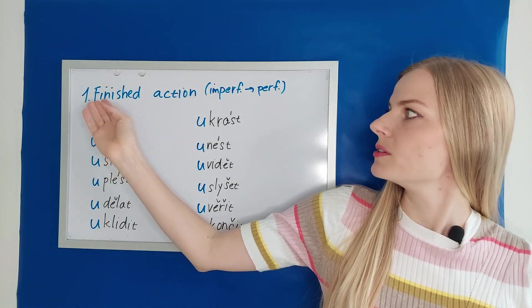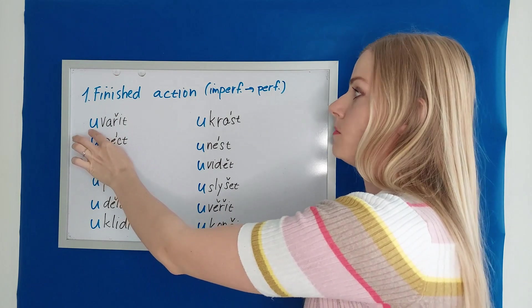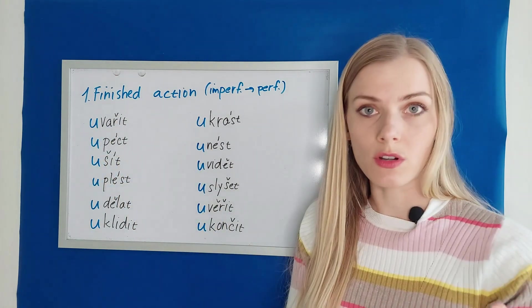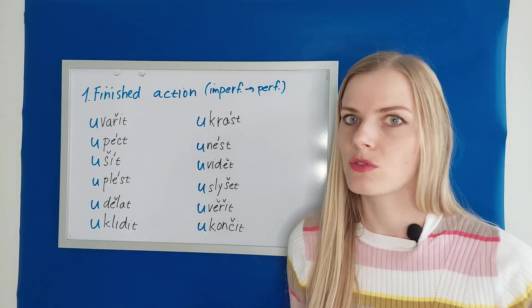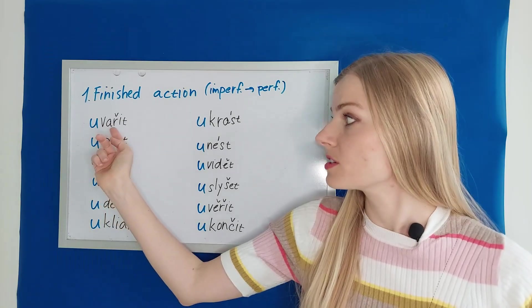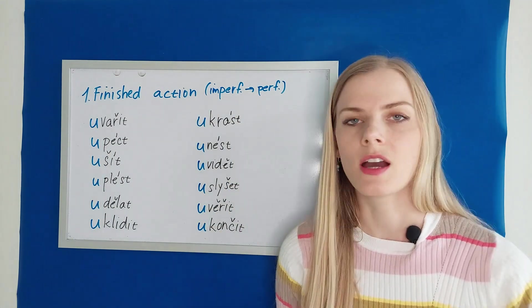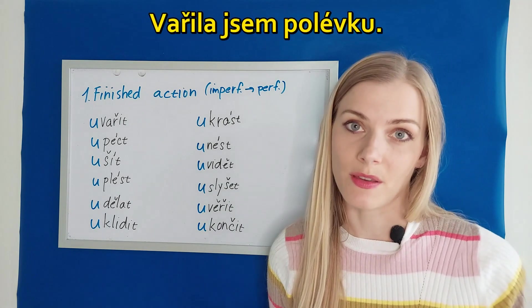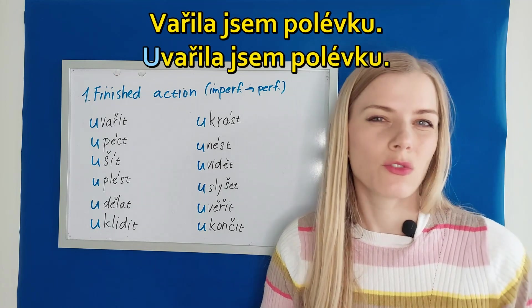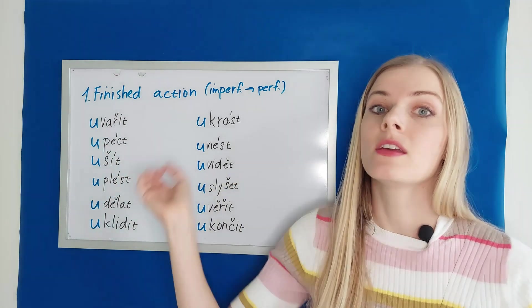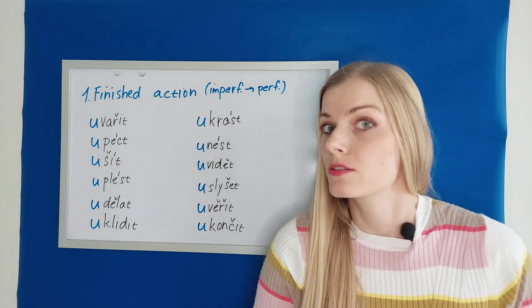The first category talks about a finished action. That means we have an imperfective verb and we add a prefix U such as vařit. Vařit is to cook. And it's imperfective. I am cooking. When I put U, uvařit, it means it's done. I make the verb perfective. I could say Vařila jsem polévku. I was cooking the soup. Uvařila jsem polévku. I cooked the soup. It's done. In this category, the meaning of the verb is not changed. It's still the same action and we just say that it's finished.